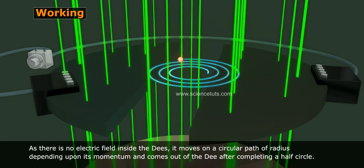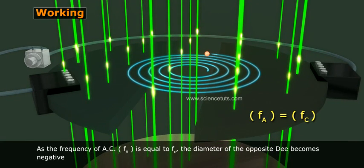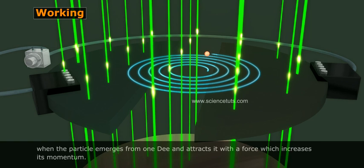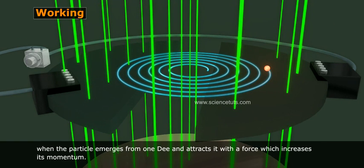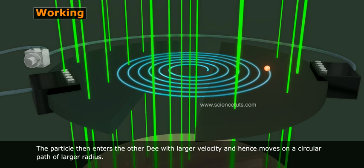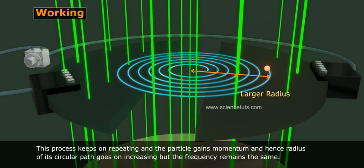As there is no electric field inside the D's, it moves on a circular path of radius depending upon its momentum and comes out of the D after completing a half circle. As the frequency of AC F_A is equal to F_C, the diameter of the opposite D becomes negative when the particle emerges from one D and attracts it with a force which increases its momentum. The particle then enters the other D with larger velocity and hence moves on a circular path of larger radius. This process keeps on repeating and the particle gains momentum and hence radius of its circular path goes on increasing, but the frequency remains the same.